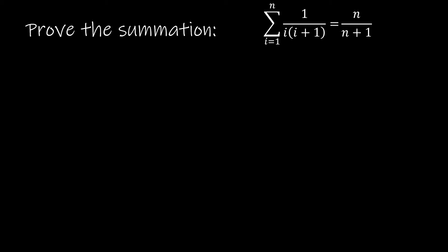Now let's look at another proof. We're trying to prove that the summation as i goes from 1 to n of 1 over i times i plus 1 is equal to n over n plus 1. To give a sense of what we're looking at: if n is 1, I have 1 over 1 times 2; if n is 2, I have 1 over 2 times 3; if n is 3, I have 1 over 3 times 4. We're saying the sum up to n equals n over n plus 1 — for example, up to n equals 3, that's 3 over 4.